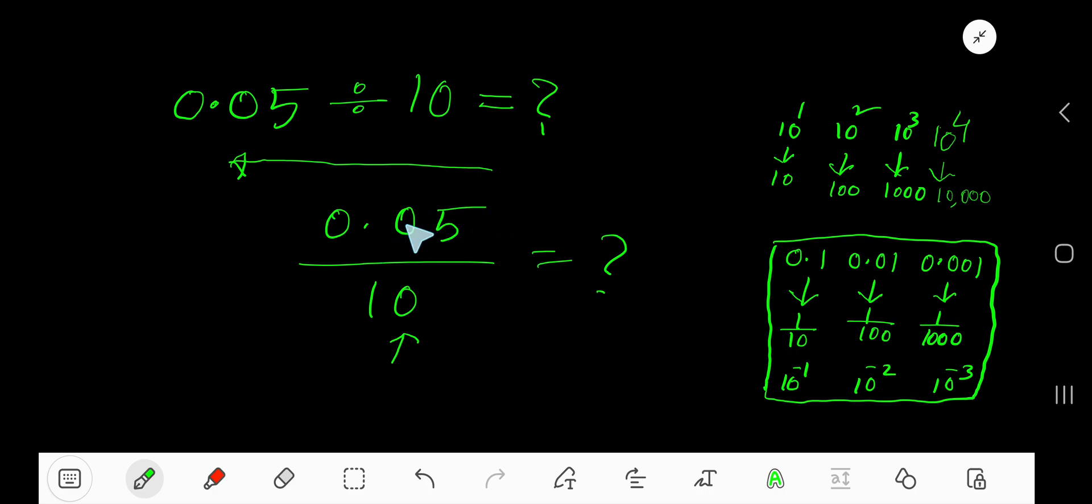Right, so the decimal point will move from right to left. How many places? You just need to count the number of zeros in the power of 10. Here, one. So the decimal point will move one place from right to left.